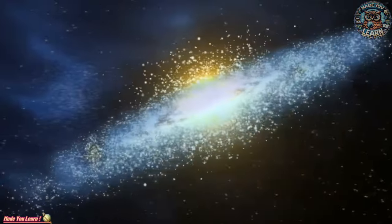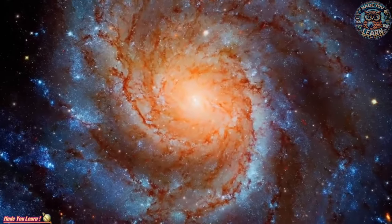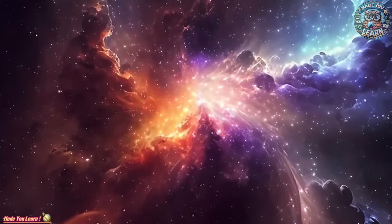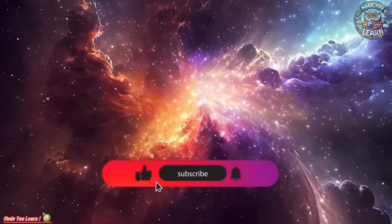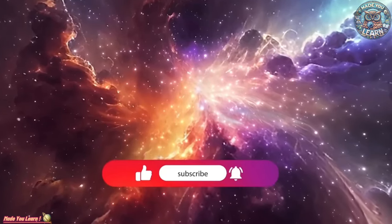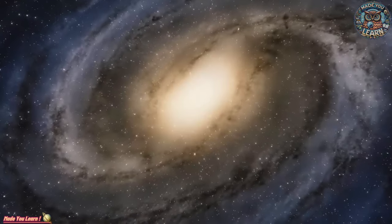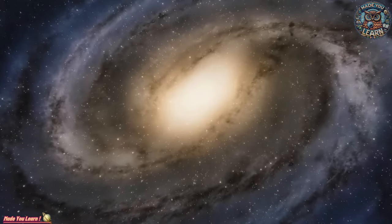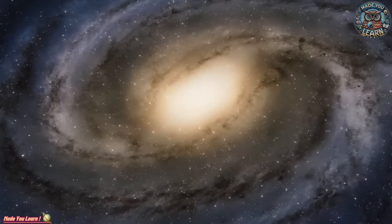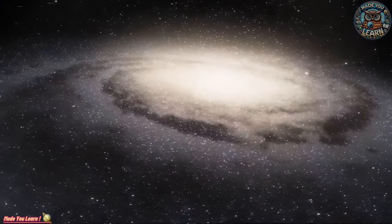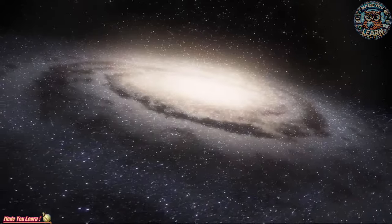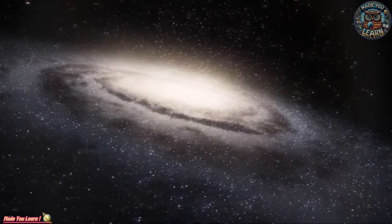At the heart of the Milky Way lies its nucleus, a dense and bright region bustling with activity. This core is anchored by a supermassive black hole named Sagittarius A. This black hole is a colossal entity whose gravitational pull orchestrates the dance of stars and gas clouds around it. Though invisible to the naked eye, the effects of this black hole are evident in the high-speed orbits of nearby stars, offering a glimpse into the dynamic forces at play in the galaxy's center.